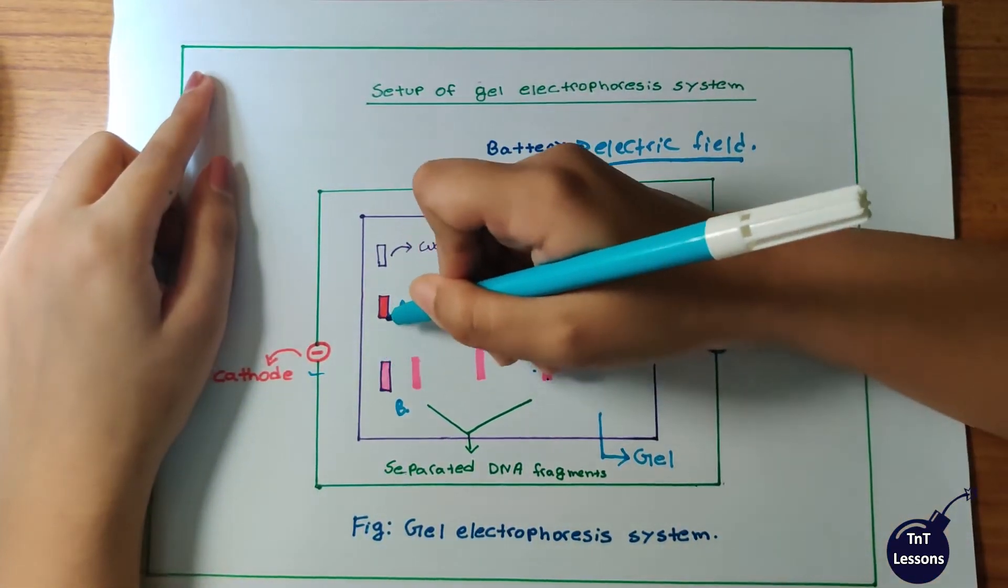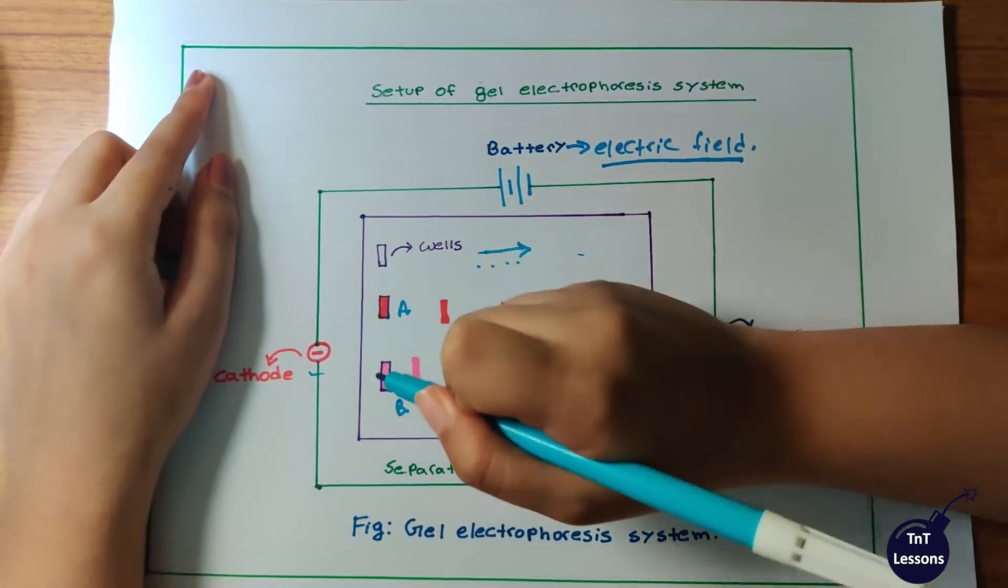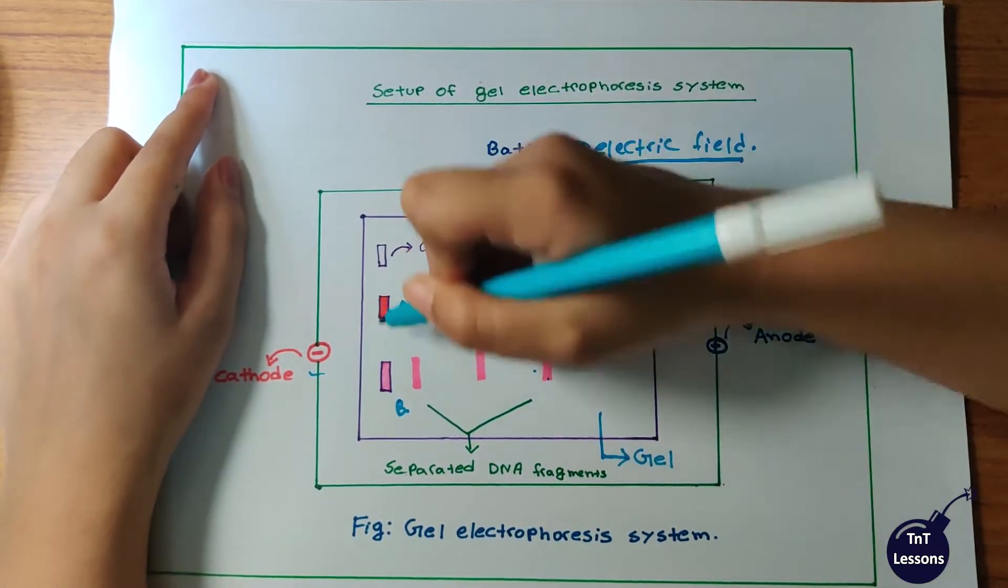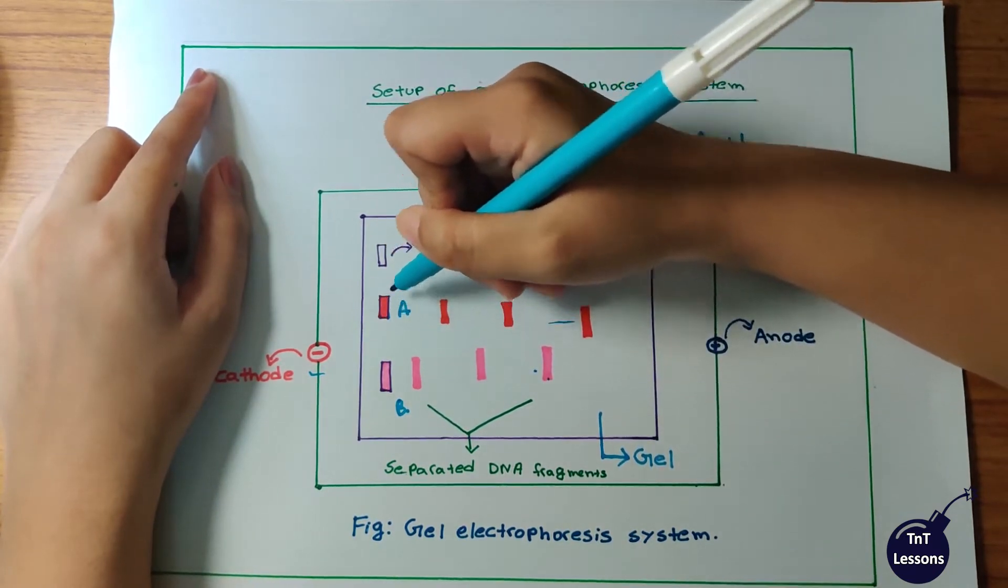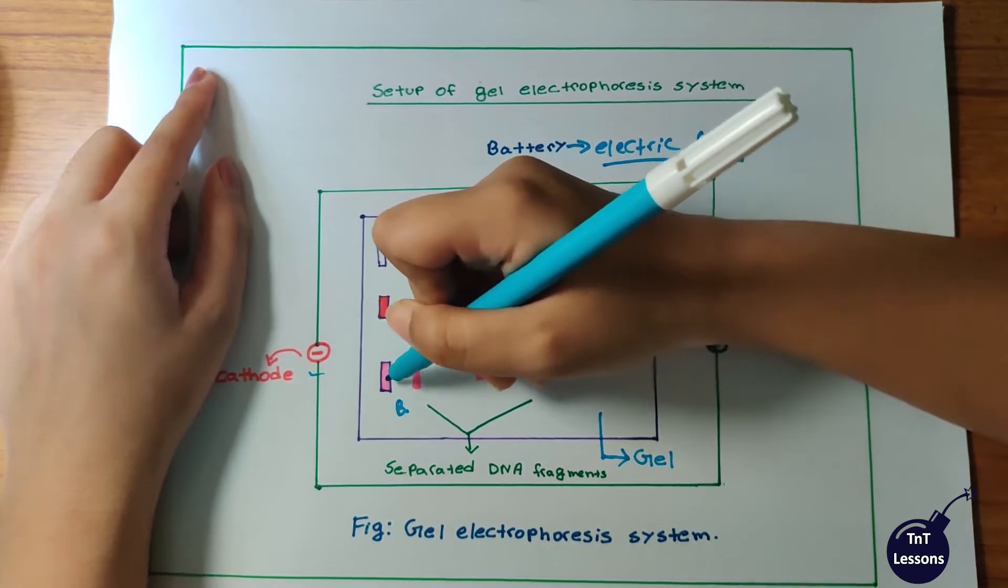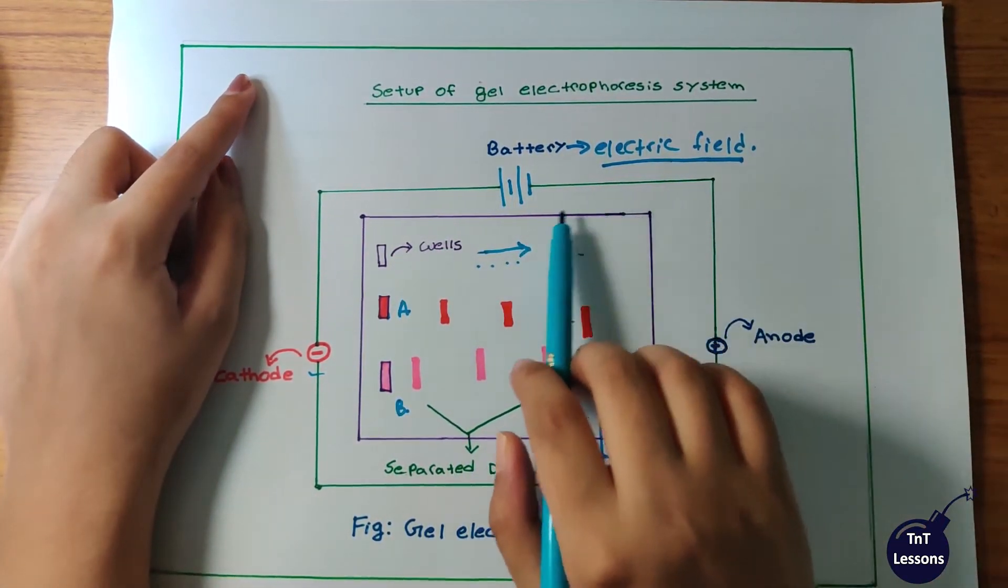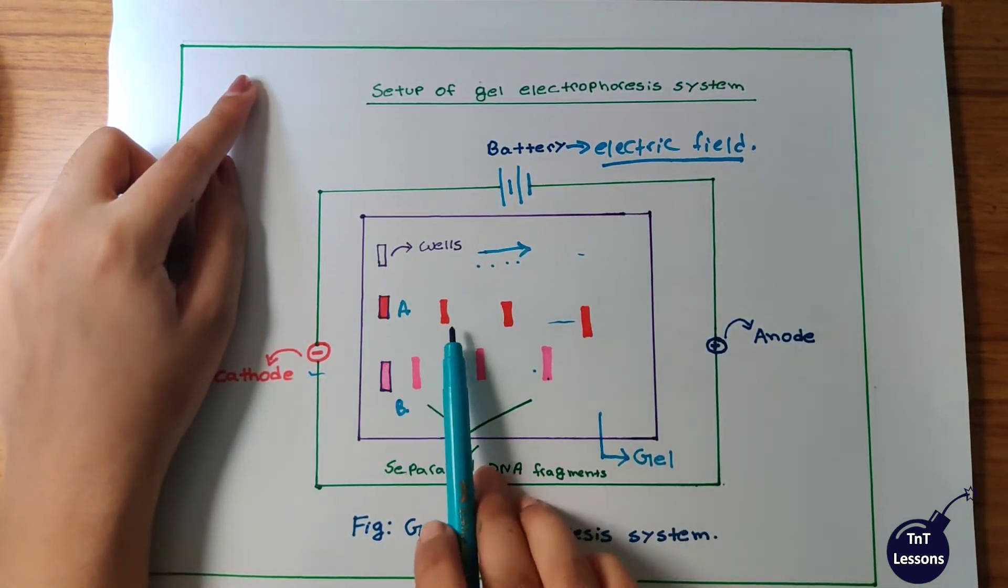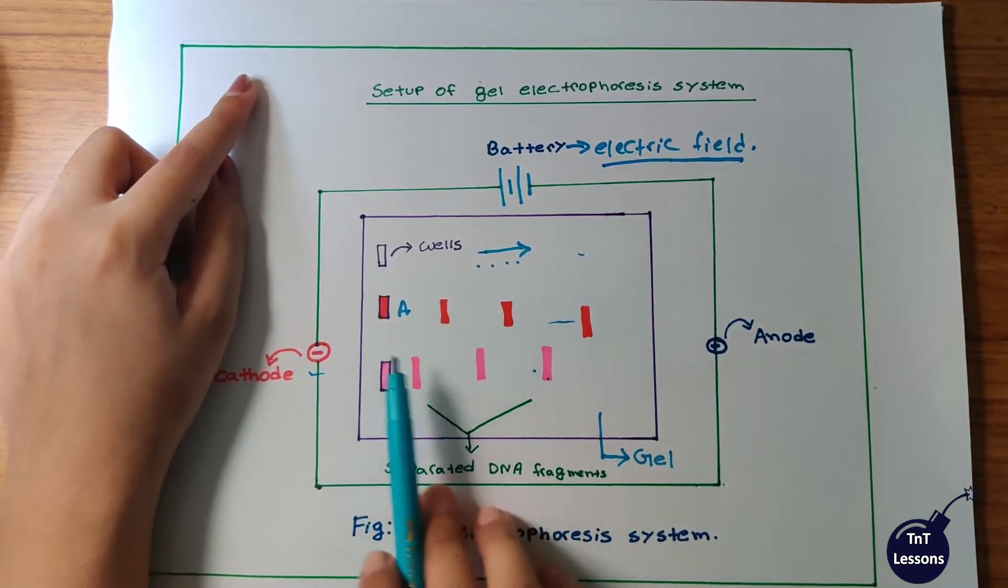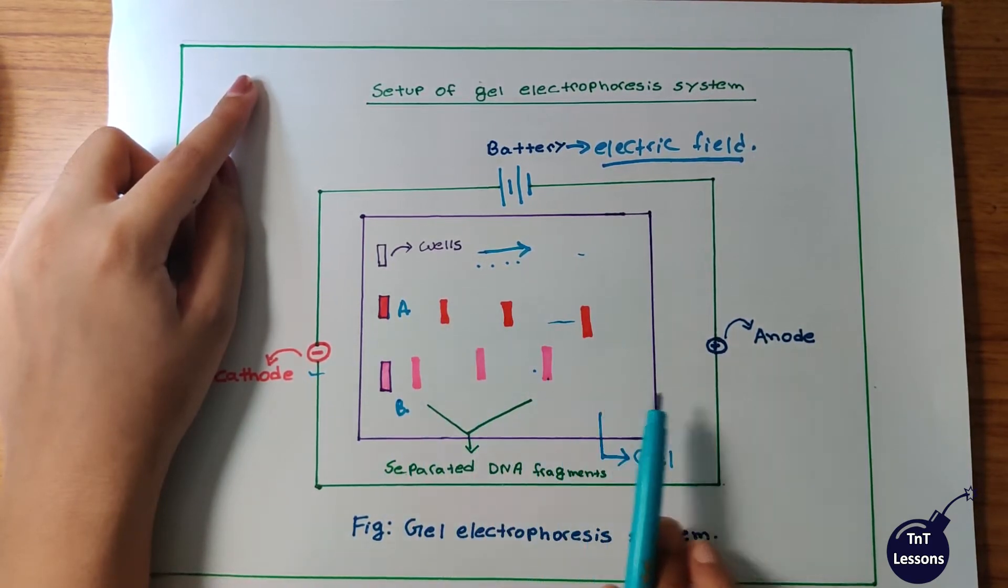We have small wells. We insert DNA samples into these wells. Due to the electric field produced by the battery, the DNA fragments move toward the anode.